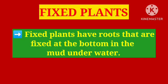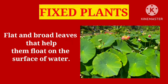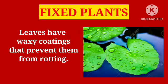Fixed plants have roots that are fixed at the bottom in the mud underwater. These plants have flat and broad leaves that help them float on the surface of water. Their leaves have waxy coatings that prevent them from rotting.